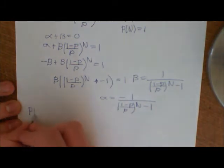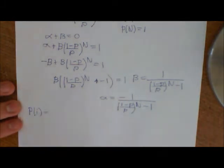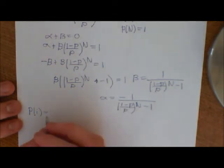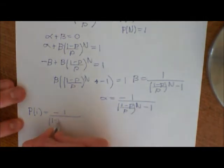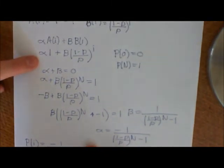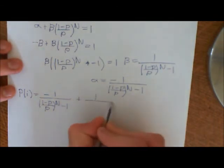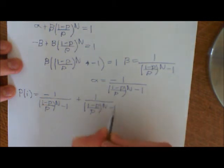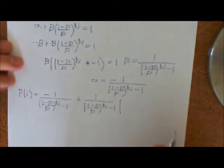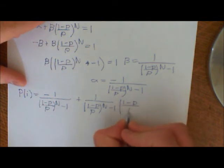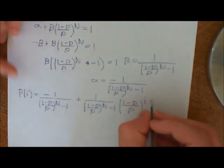Therefore the general solution P(i), well, sorry, not the general solution, our specific solution now, which satisfies our boundary conditions, is equal to -1 over ((1-P)/P)^N, so I'm just sticking these numbers into our original equation for the solution here. That number is α plus the β, which is 1 over ((1-P)/P)^N minus 1 times, now we have (1-P)/P to the power of i.